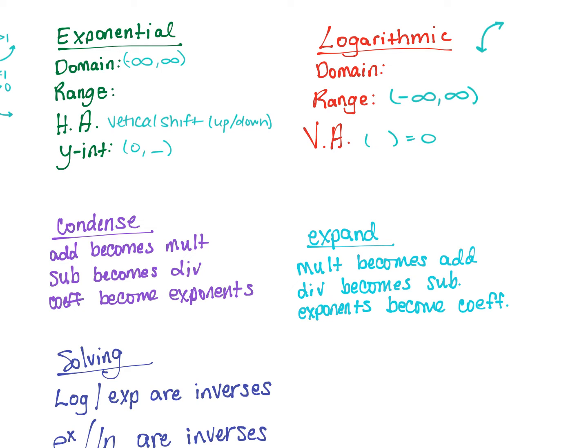Next, we look at expanding and condensing log form. When you condense log form, addition becomes multiplication, subtraction becomes division, and your coefficient becomes your exponent. When you expand, multiplication becomes addition, division becomes subtraction, and your exponent becomes your coefficient.